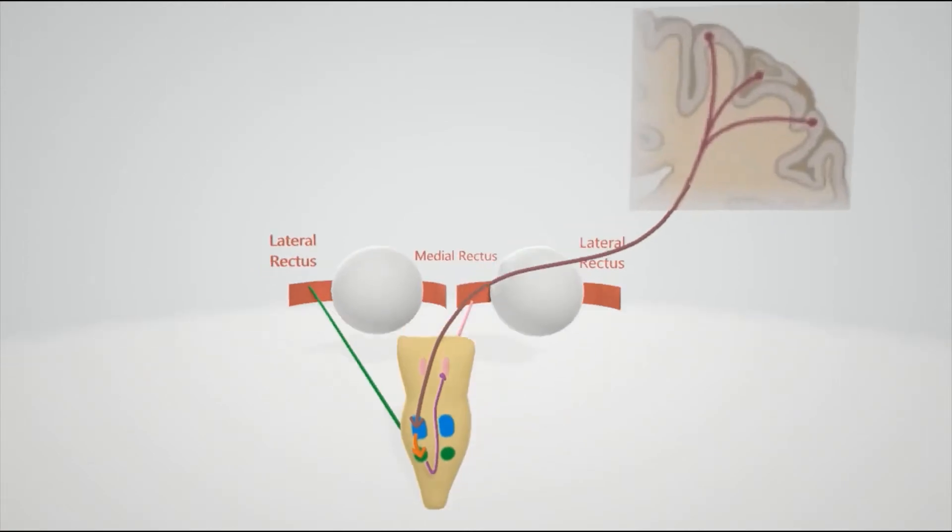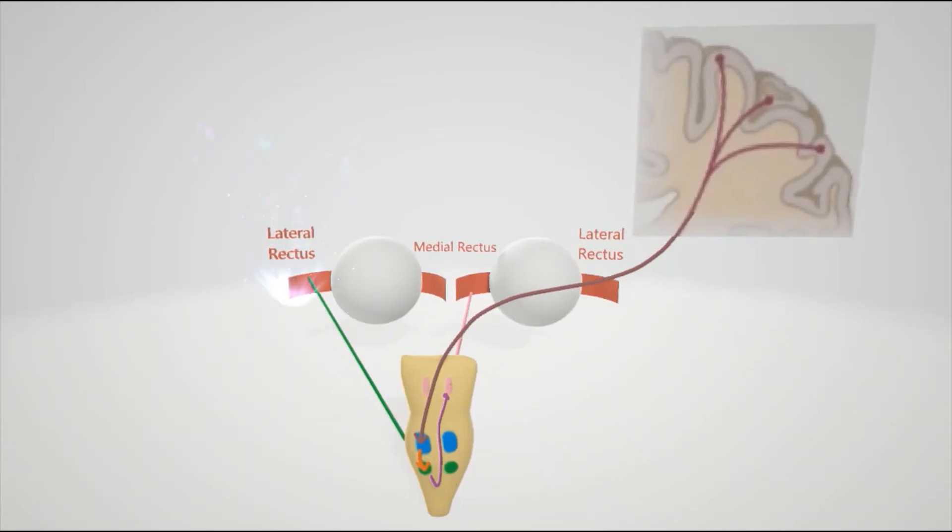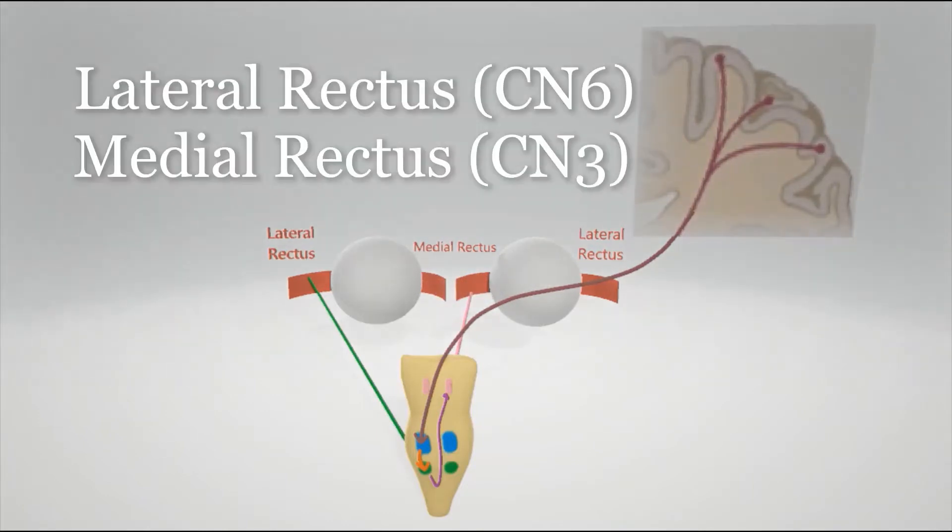Let's say a person looks to the left, so the lateral rectus on the left is going to need to contract, and the medial rectus on the right eye is going to need to contract. The problem is the lateral rectus is innervated by cranial nerve 6, whereas the medial rectus is innervated by cranial nerve 3.